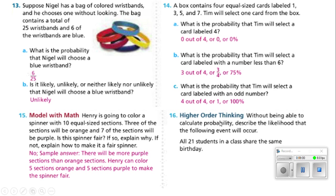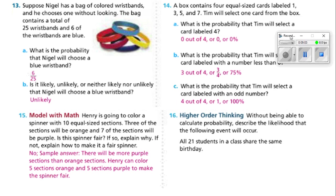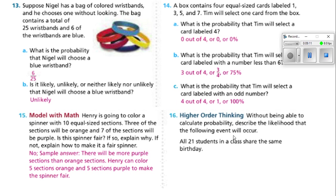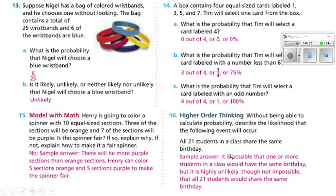Number 16: without calculating probability, describe the likelihood that all 21 students in a class share the same birthday. It is possible that one or more students might share a birthday, but it is highly unlikely — though not impossible — that all 21 students would share the same birthday.